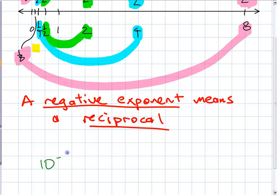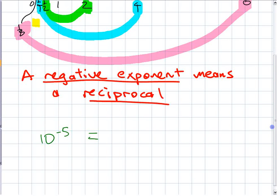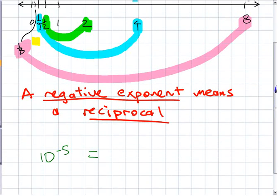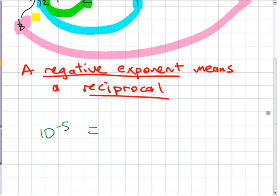10 to the negative 5. What's that the same as? Without the negative exponent. Because we want to translate it into something with a positive exponent or just a fraction. What is that the same as? If you had a number line that had 10s instead of 2s, if you were multiplying by 10 instead of multiplying by 2, that's going to be the same as not multiply. If it was 10 to the 5th, that means multiply by 10 five times. Times 10, 10, 10, 10, 10.